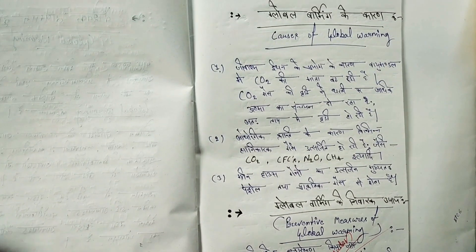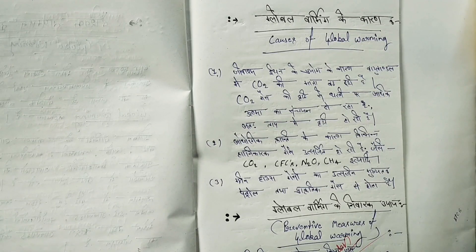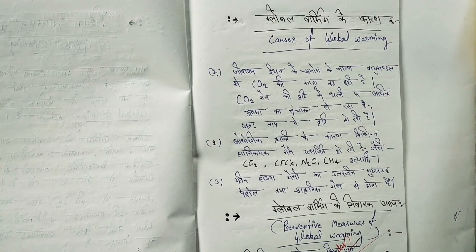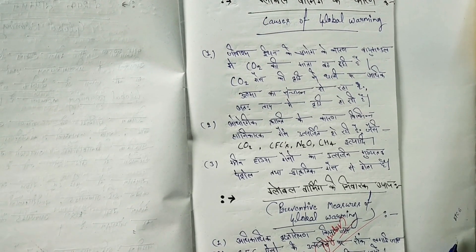Causes of global warming: first, jeevashm indhan ke prayog ke kaaran vayu mandal mein CO2 ki maatra badh rahi hai, jisse dharti par adhik ushma ka sanchayan ho raha hai aur tapman mein vridhi ho rahi hai. Second, audyogik kranti ke kaaran vibhinn hanikarak gase utsarjit ho rahi hain — CO2, CFCs, N2O, CH4. Greenhouse gases ka utsarjan mukhyatah petrol tatha prakartik gas se hota hai.